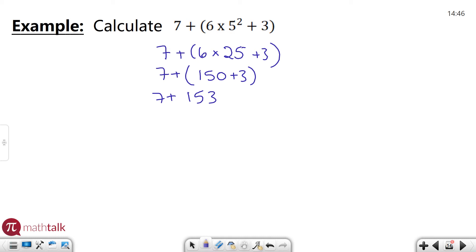Well, all that's left is to add seven plus 153 and I get 160. So the order of operations for this simplifies down to 160. Let's look at one more example.